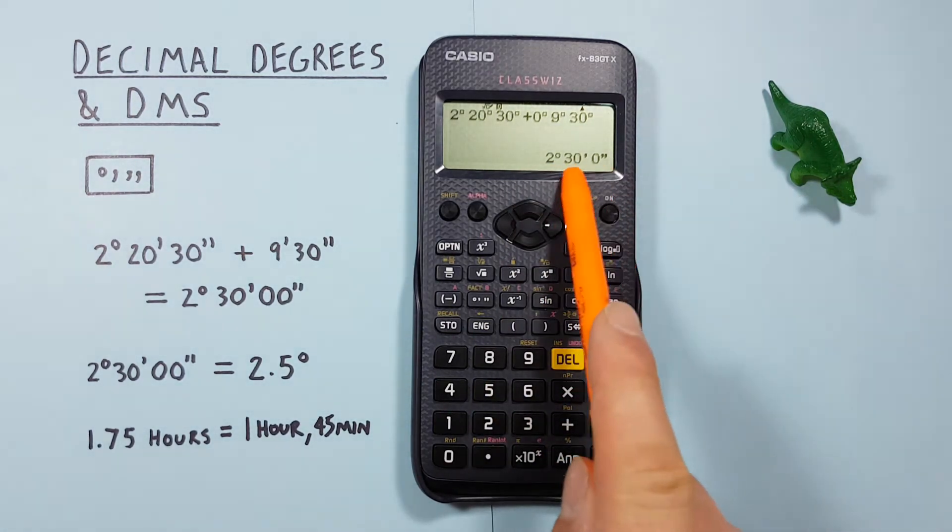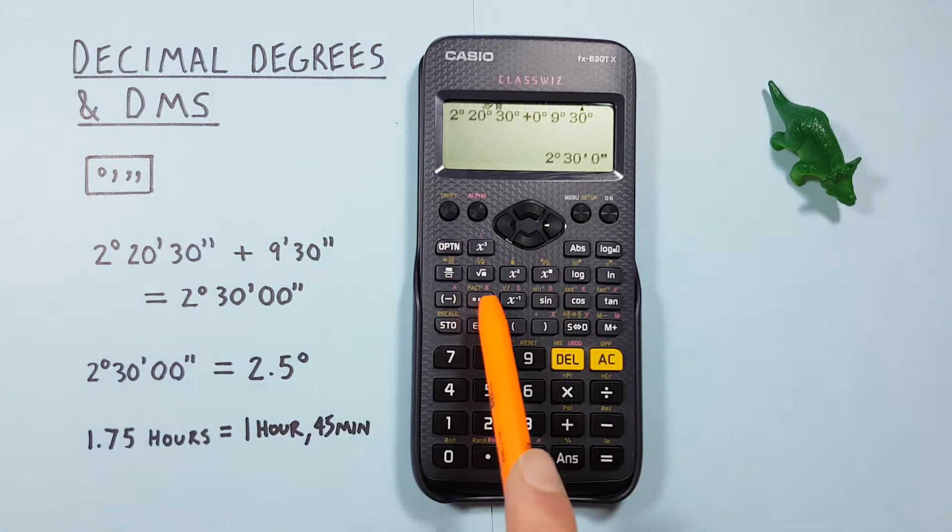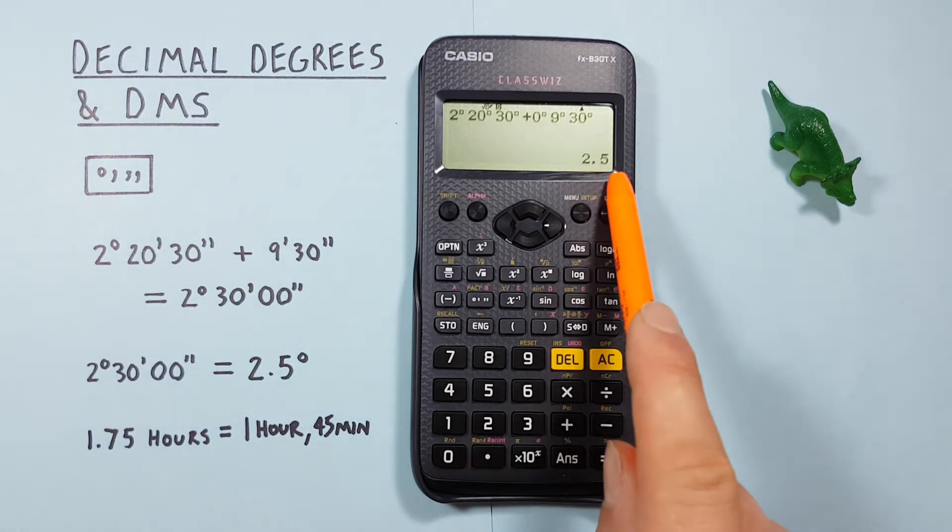Once this is calculated, if we want to convert this to decimal degrees, we can do that by pressing the degrees minutes seconds key again, once. And we see that converts to 2.5.